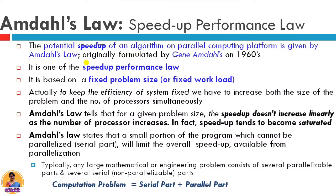Amdahl's Law was formulated by Gene Amdahl, a computer architect at IBM, who proposed it in 1960. It is based on fixed problem size or fixed workload. To keep system efficiency fixed, we need to increase both the number of processes and the problem size simultaneously. But in traditional problems, the problem size is fixed while the number of processes increases. As we go from 2 to 3 to 4 to 5 processes, speed up ideally should keep increasing, but in practice this does not happen.